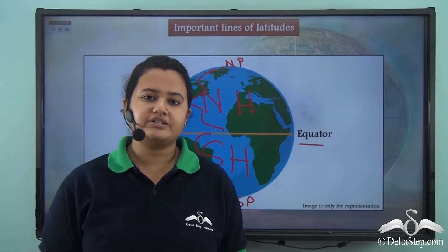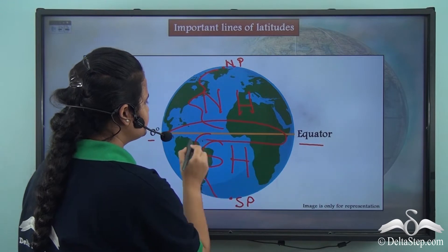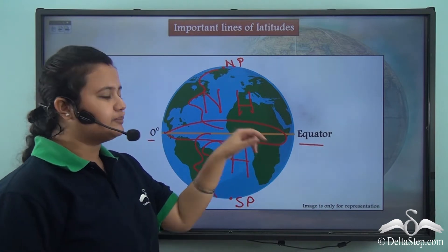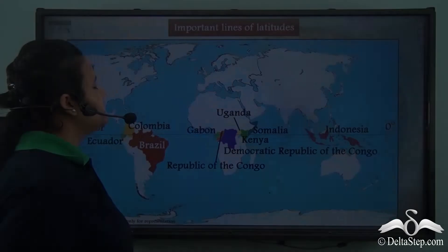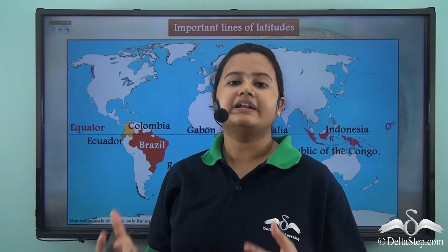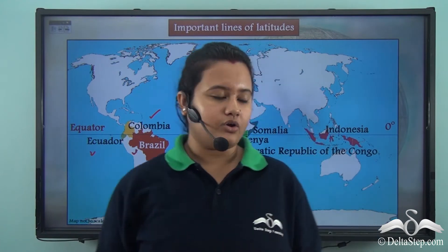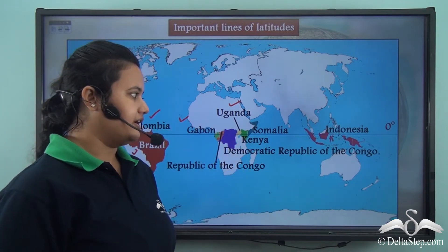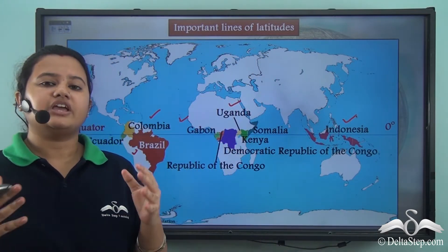The equator makes an angle of zero degree with the orbital plane. The zero degree latitude or equator passes through several countries, including Ecuador, Colombia, Brazil, and also other countries like Gabon, Uganda, and many other countries of Central Africa, and also through Indonesia.